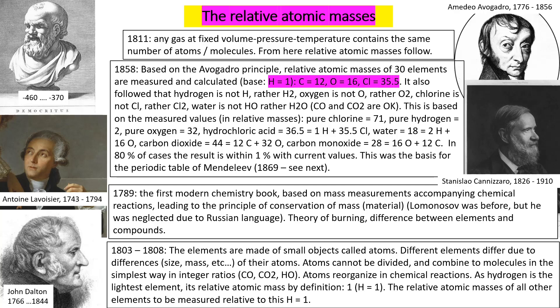When I perform engineering calculations I usually start with four-digit values, get four-digit accuracy in the result, and then round to three digits. Therefore I need atomic masses of all elements with at least four digits of accuracy, and the values from Cannizzaro are not sufficient for me.